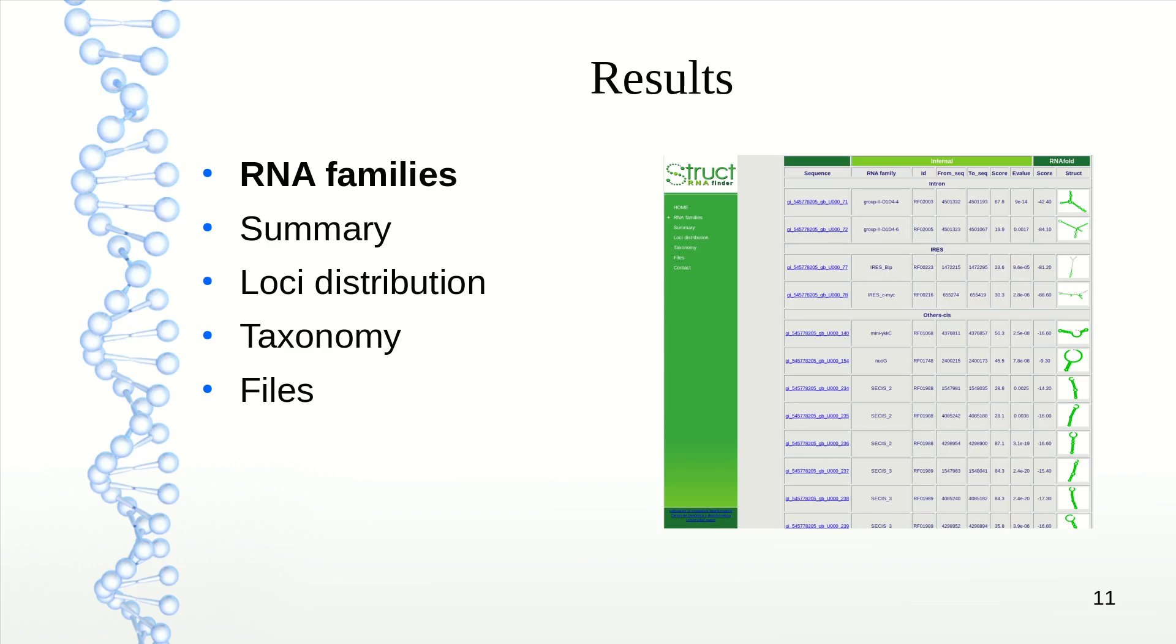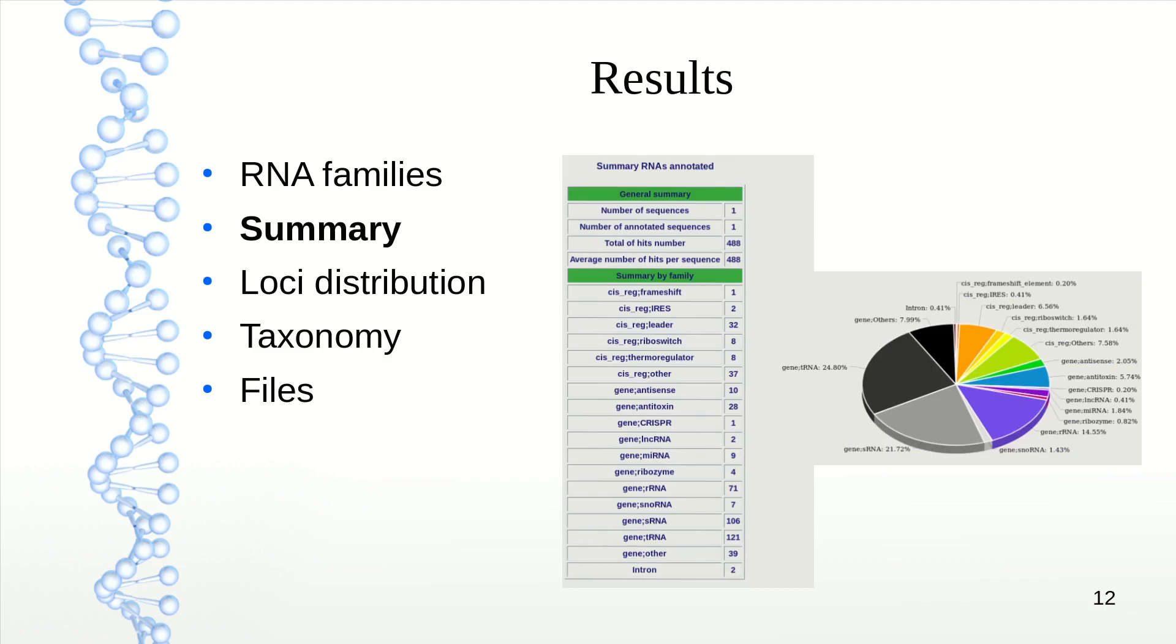In the summary of results, we can see we provided one sequence with 488 hits, and which family the RNAs belong to. On the right side is a pie chart, automatically made, showing how much each family is represented in the results.